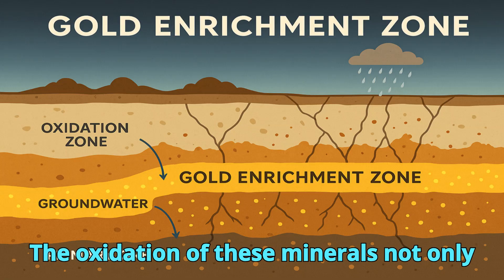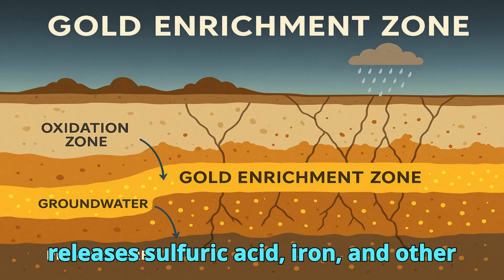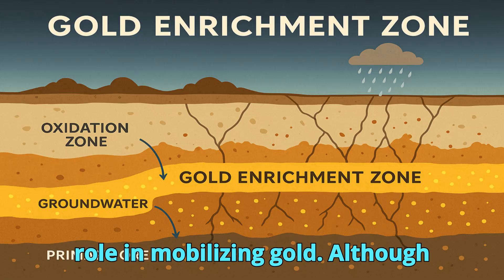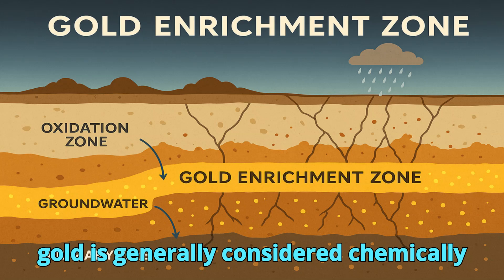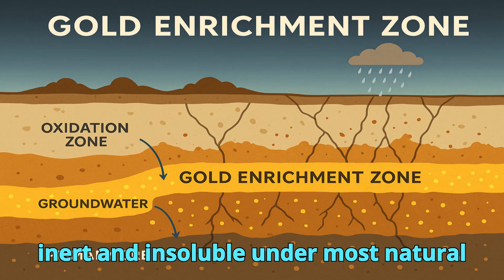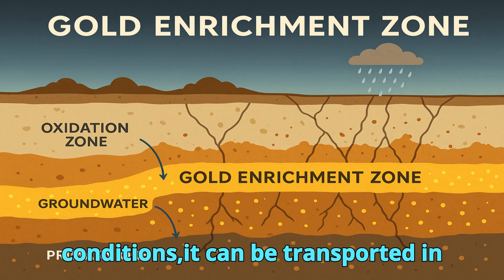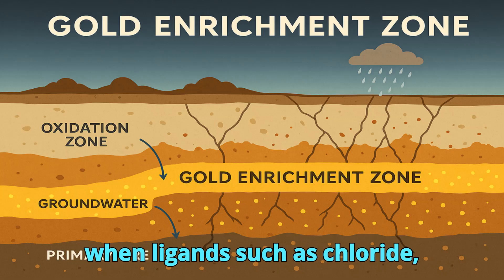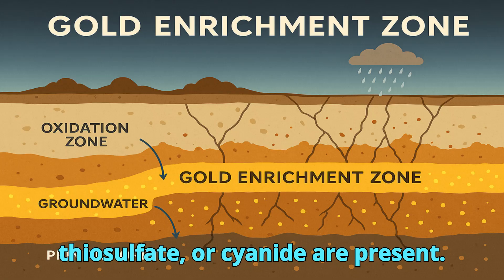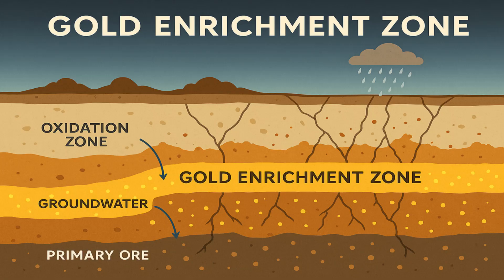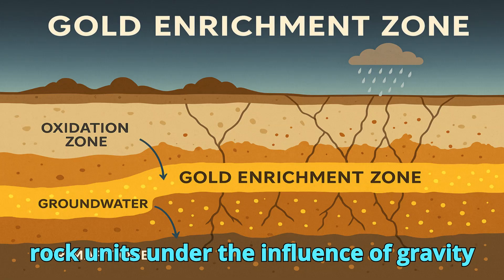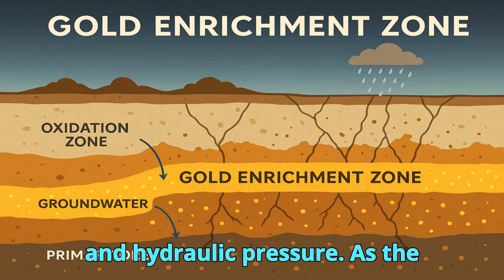The oxidation of these minerals not only releases sulfuric acid, iron, and other byproducts, but it also plays a critical role in mobilizing gold. Although gold is generally considered chemically inert and insoluble under most natural conditions, it can be transported in solution as gold complexes, especially when ligands such as chloride, thiosulfate, or cyanide are present. These gold-bearing fluids migrate downward through fractures and porous rock units under the influence of gravity and hydraulic pressure.